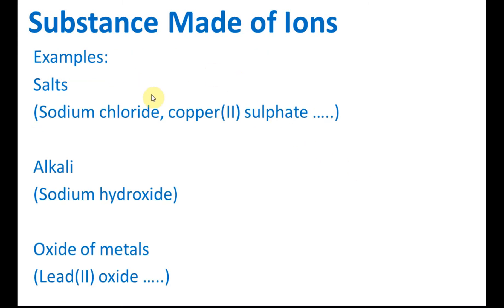Examples include salts like sodium chloride. Sodium is metal, chloride is from non-metals. Copper is metal and sulphate is from non-metal. They can also be alkali - sodium is metal, hydroxide is non-metal. This is a positive ion, this is a negative ion. And oxides of metal. Lead oxide. Lead is metal and oxide is non-metal. It's a combination or mixtures of metals and non-metals. Metals usually are the positive ions and non-metals are the negative ions.